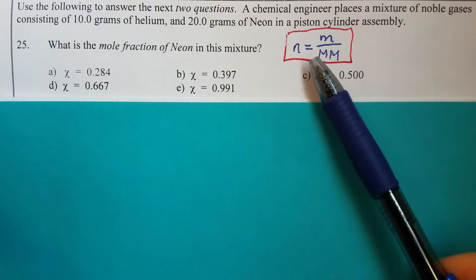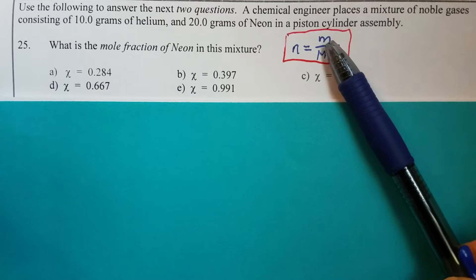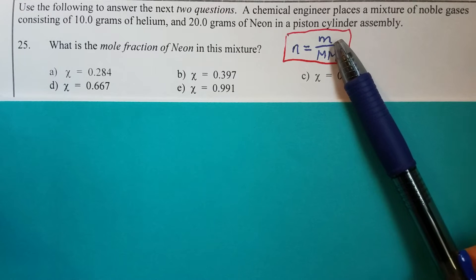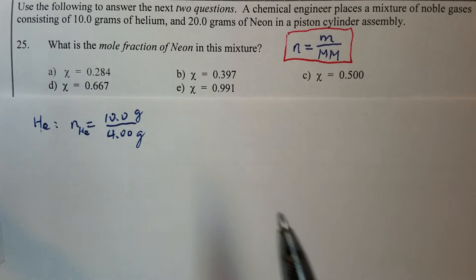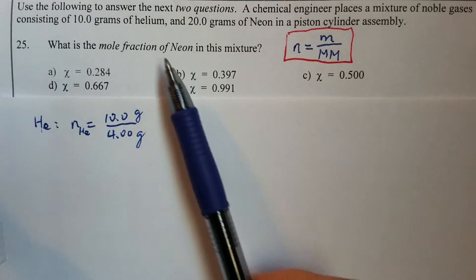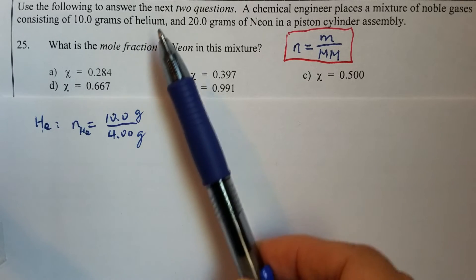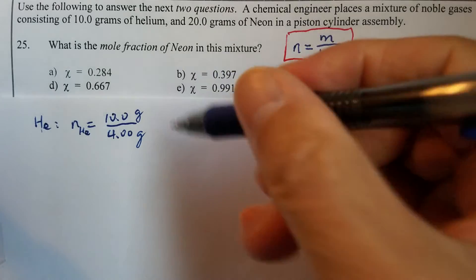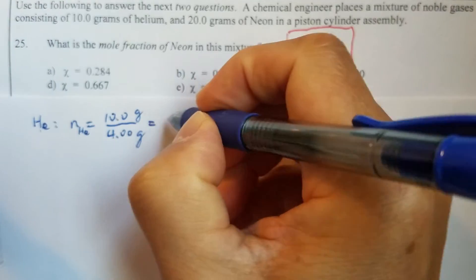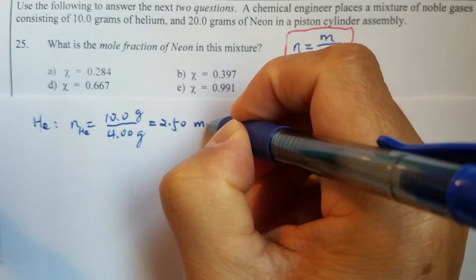The equation for calculating the number of moles for a substance can be calculated using the mass over the molar mass. For helium, the mass is 10 grams and the molar mass of helium is 4 grams, so therefore this gives us 2.5 moles.